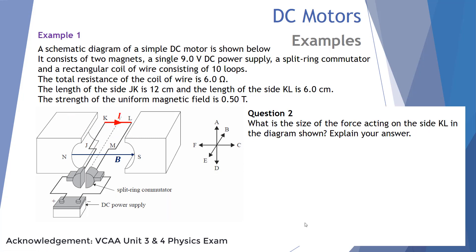Question 2: What is the size of the force acting on side KL? In this scenario, the current running through KL and the magnetic field strength B are parallel, so there is no force on section KL. When the magnetic field and current are parallel, no force is generated.